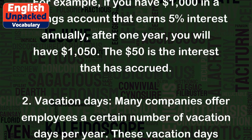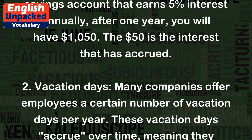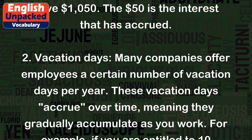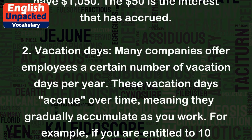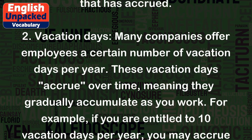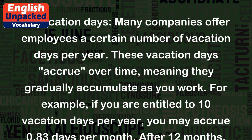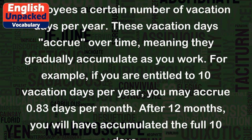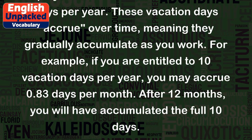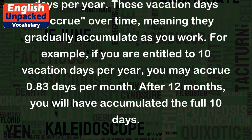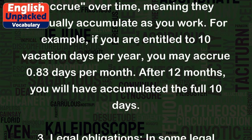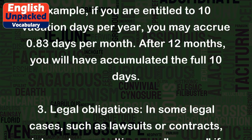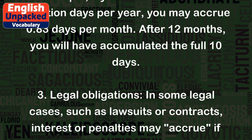Two: Vacation days. Many companies offer employees a certain number of vacation days per year. These vacation days accrue over time, meaning they gradually accumulate as you work. For example, if you are entitled to 10 vacation days per year, you may accrue 0.83 days per month. After 12 months, you will have accumulated the full 10 days.